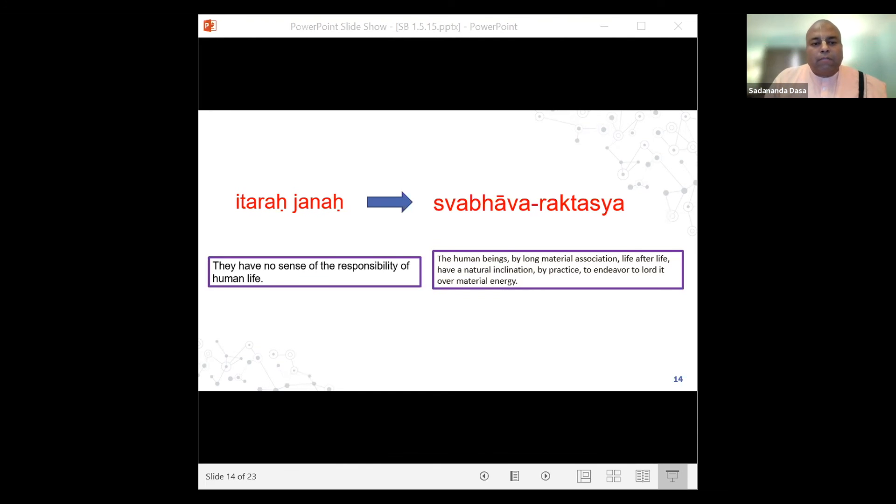There are four verses of Bhagavatam which are called the Chatur Shluki Bhagavatam 2.9.33 to 36, called the Seed Giving Verses or the Essence of Bhagavatam. Just like a big banyan tree or mango tree can come out from a small seed, the whole essence of Srimad Bhagavatam is there in these four seed verses. Every verse in the Bhagavatam is related to these four verses.